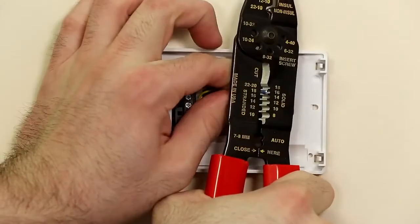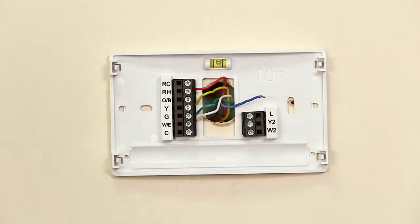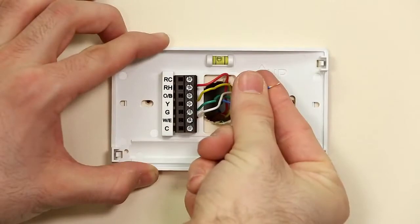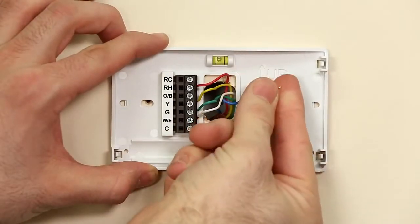Using a wire stripper, expose a quarter inch of wire at the end. Find the wire labels that came in your Sensi thermostat box and label this wire with your C wire label.